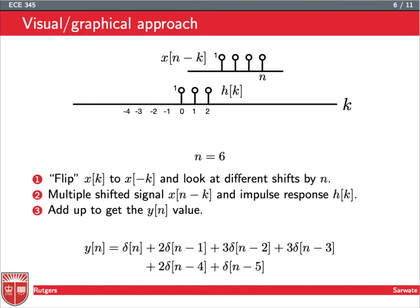At n greater than or equal to 6, we have no overlap anymore, and for all future n, we're not going to have any overlap, so the output is going to be 0. You can see now we have this total signal that we figured out from the convolution just using this flip and slide method.